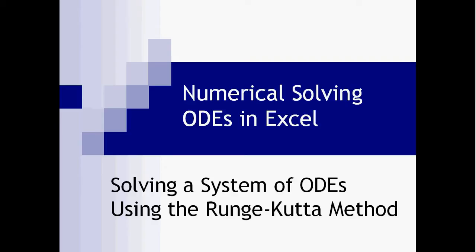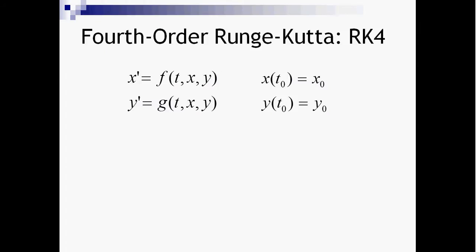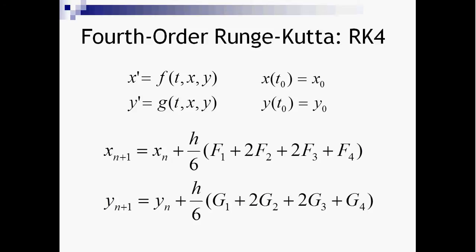I found these slides on the internet, so just to note they're not mine. This is slightly more complicated than the previous one. Our function — we have two functions: f is a function of x and y, x prime, and y prime or dy/dt is a function of time, x and y, and we have some initial conditions.